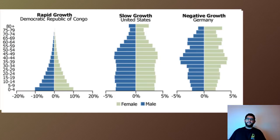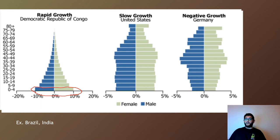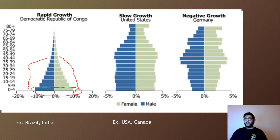On the left you see rapid growth populations — examples include the Democratic Republic of Congo, Brazil, and India. This graph is determined by percentages, showing male and female groups. You can see that 20% of the population is under the ages of zero to four, so they're going to be having babies for a long time. With so many young people, this population is going to be growing for a very long time.